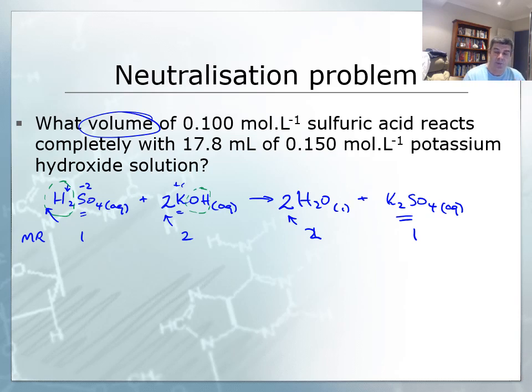I have three important variables: number of moles, which I put under the mole ratio; volume; and concentration, because number of moles divided by volume equals concentration. For the sulfuric acid, the concentration is 0.1 molar. For potassium hydroxide, it's 0.15 molar with a volume of 17.8 mL, which I convert to 0.0178 litres.